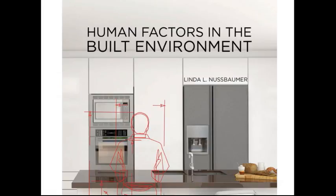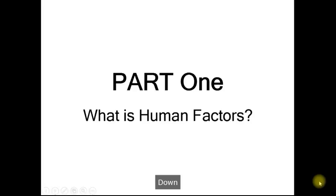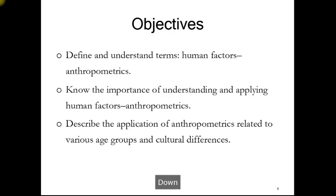Welcome to Human Factors and the Built Environment. This is Chapter 2. Today we'll be talking about anthropometrics, part of human factors. We're going to understand what the term means — it means the measurements of the human body, especially in relationship to the various activities that humans do. We're also going to understand how age and cultural differences factor into anthropometrics, and why it's important to study this.